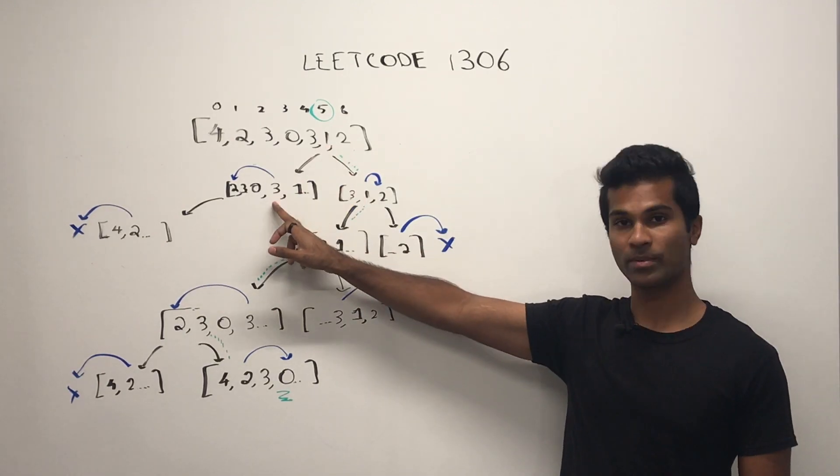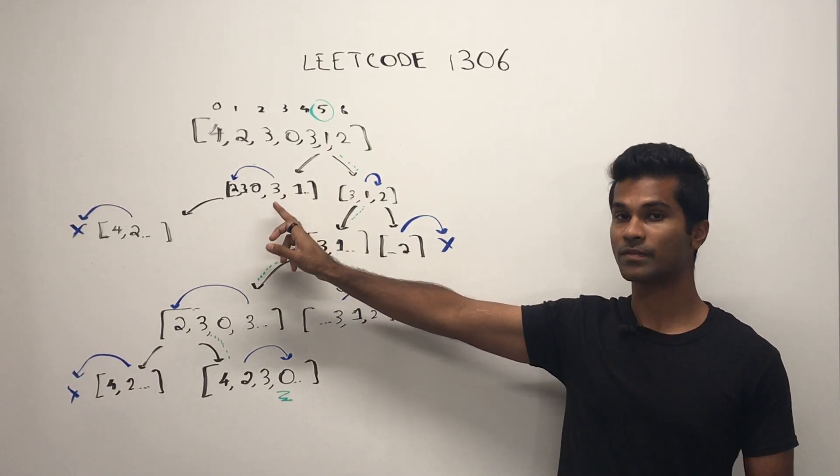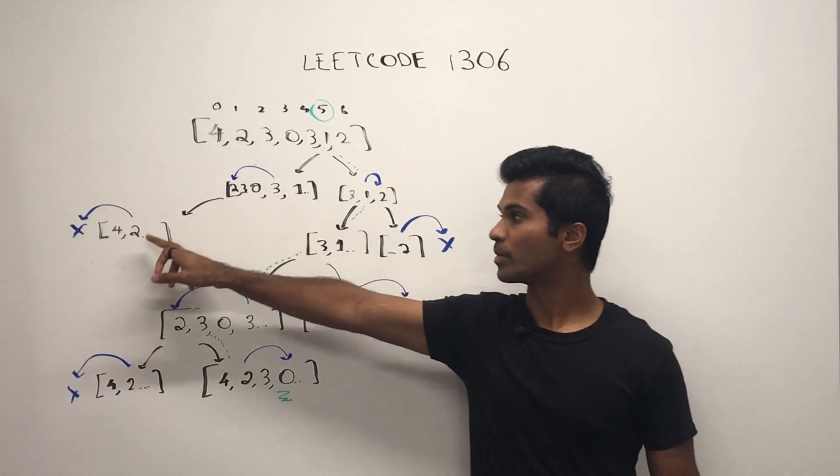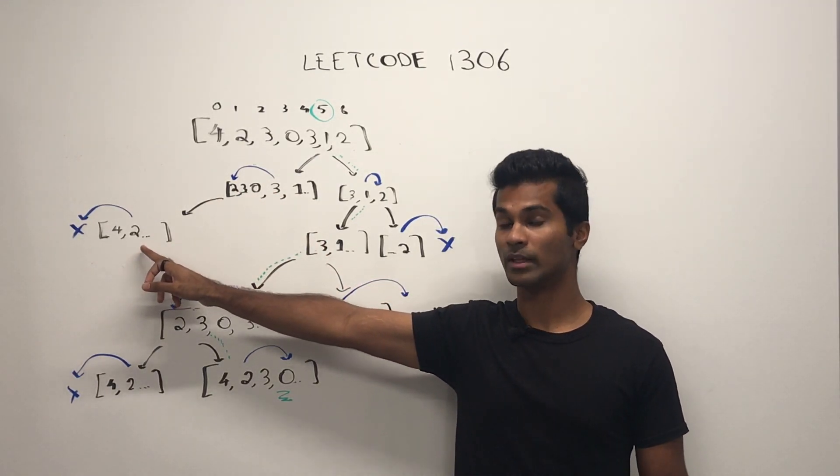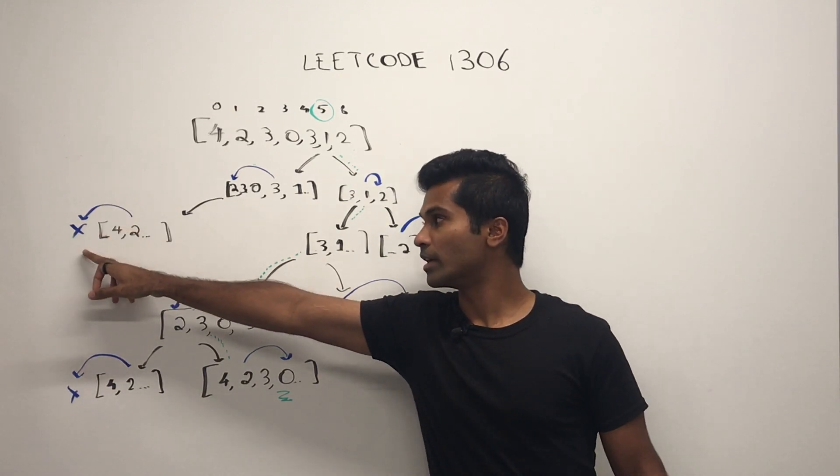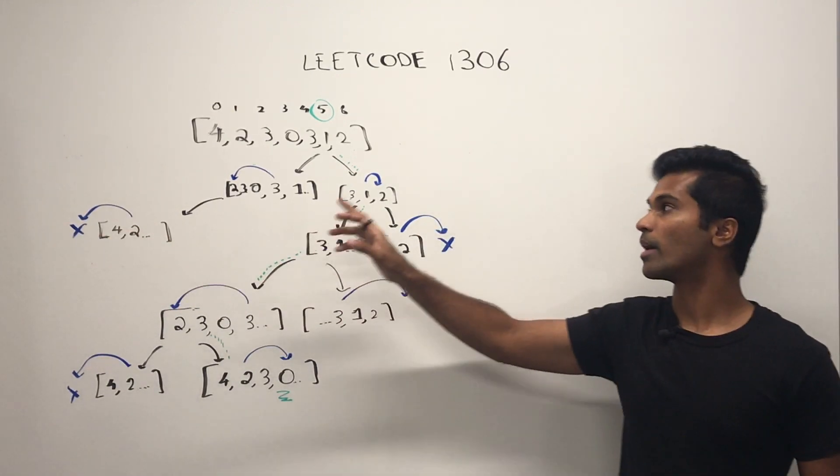Let's say we jumped to the left. We end up at three, and then we try jumping to the left again three spots. We end up at two, and then we try jumping left by two spots. Then we end up out of bounds.